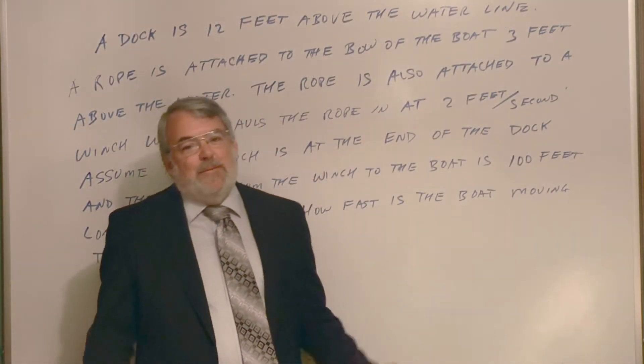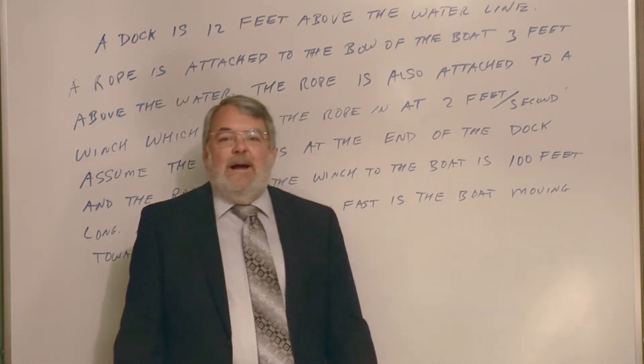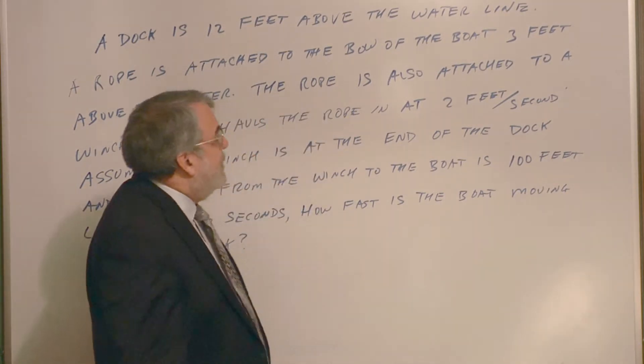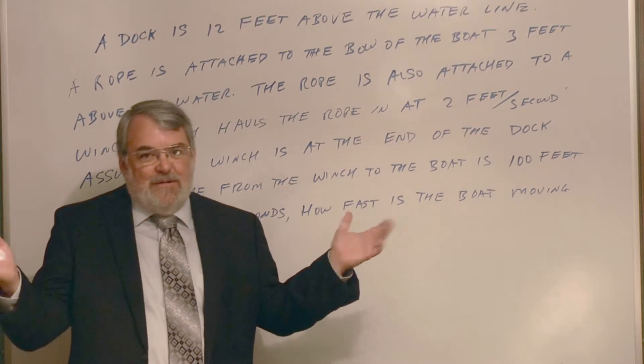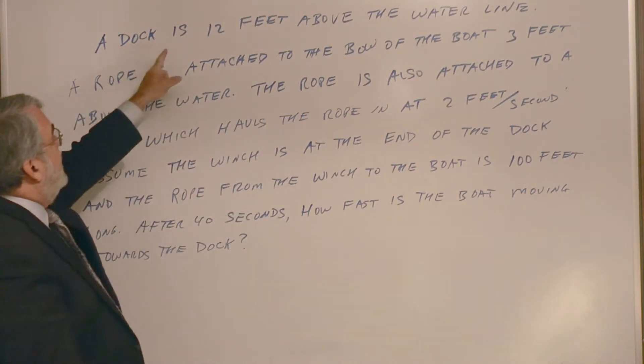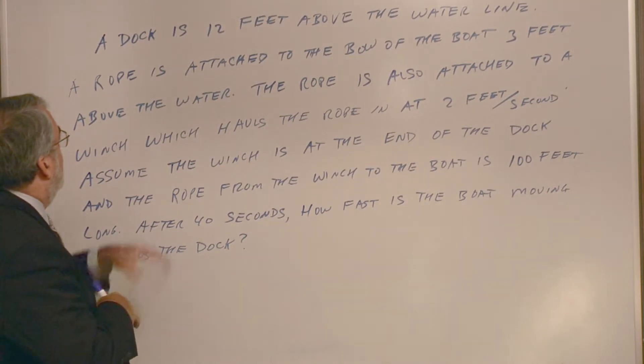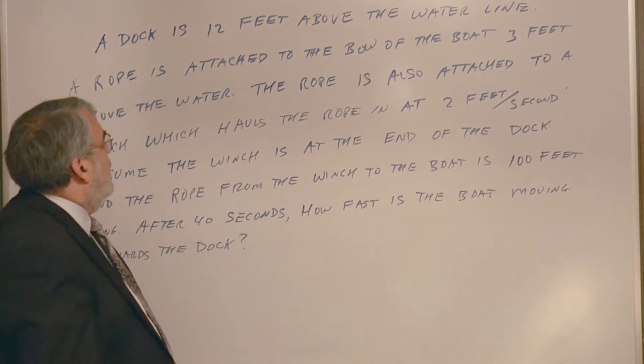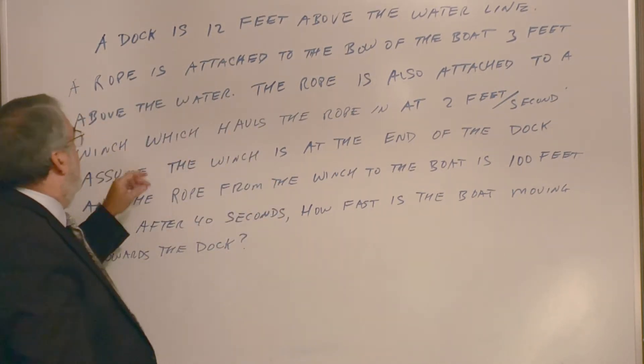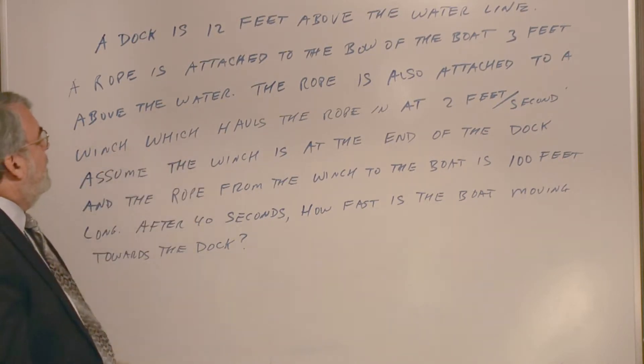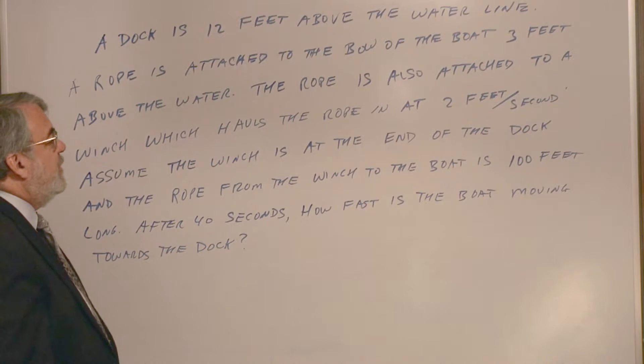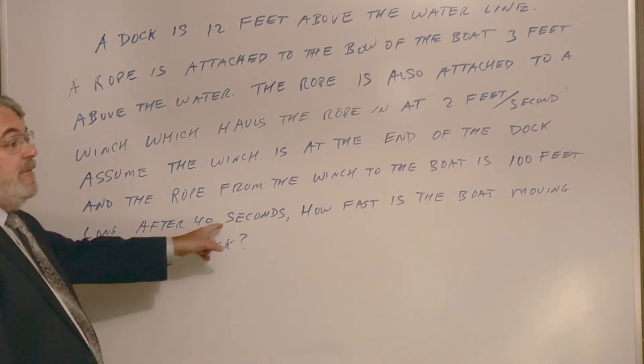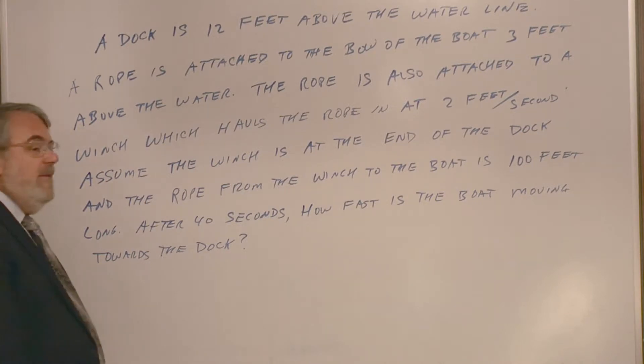This next problem is a classic textbook type problem. And I threw a little bit extra into it to make it a little more interesting, I think. Anyway, it reads long. It's not as bad as it looks. So let's read through it together. A dock is 12 feet above the water line. A rope is attached to the bow of the boat, that would be the very front of the boat, three feet above the water. The rope is also attached to a winch, which hauls the rope in at two feet per second. Assume the winch is at the end of the dock. And the rope from the winch to the boat is 100 feet long. After 40 seconds, how fast is the boat moving towards the dock?